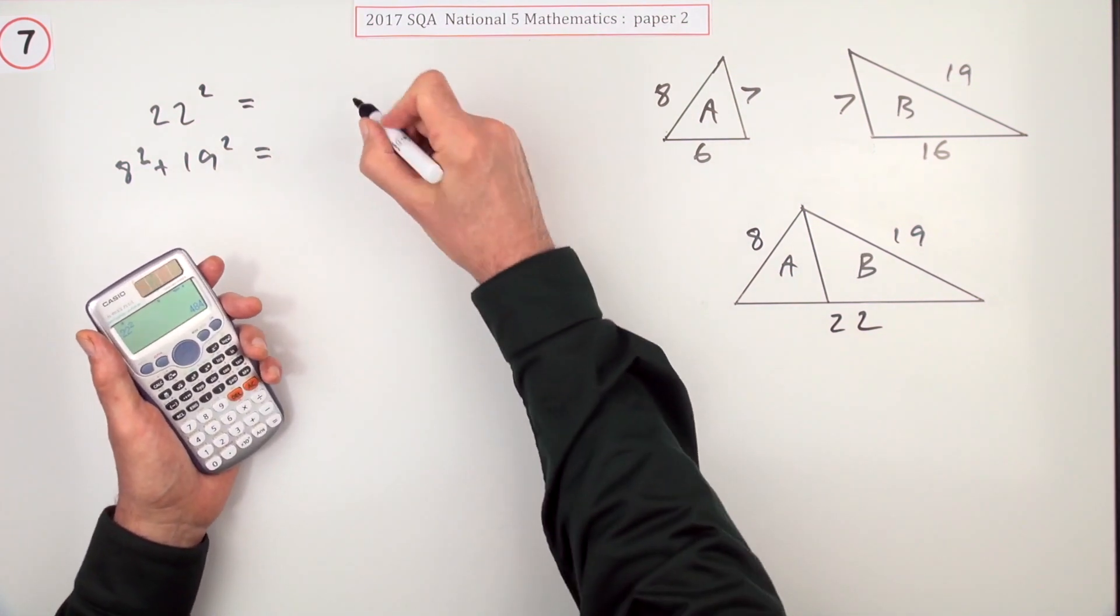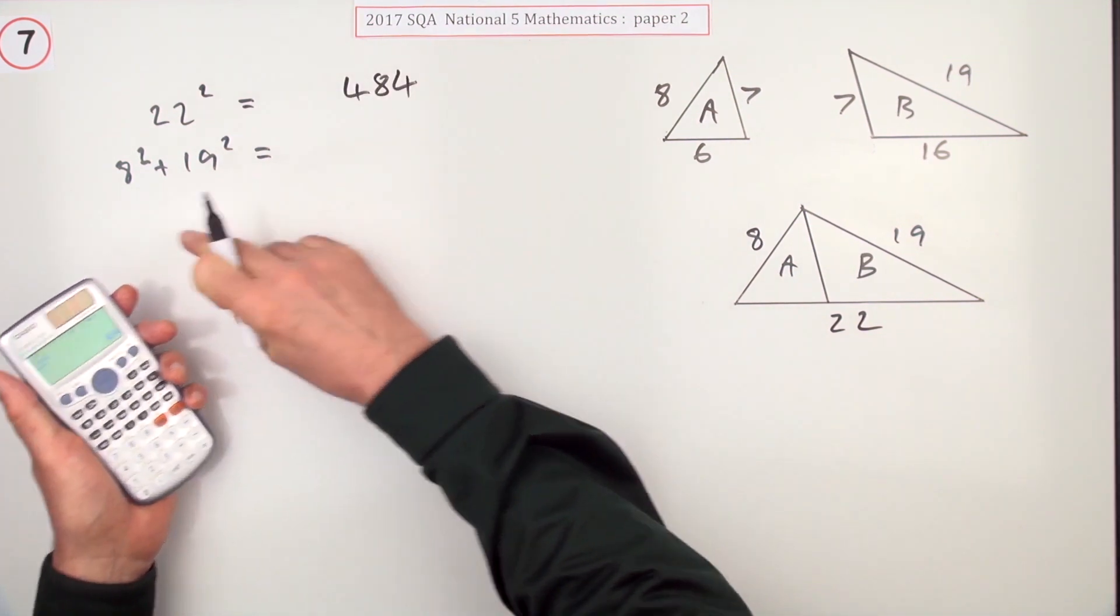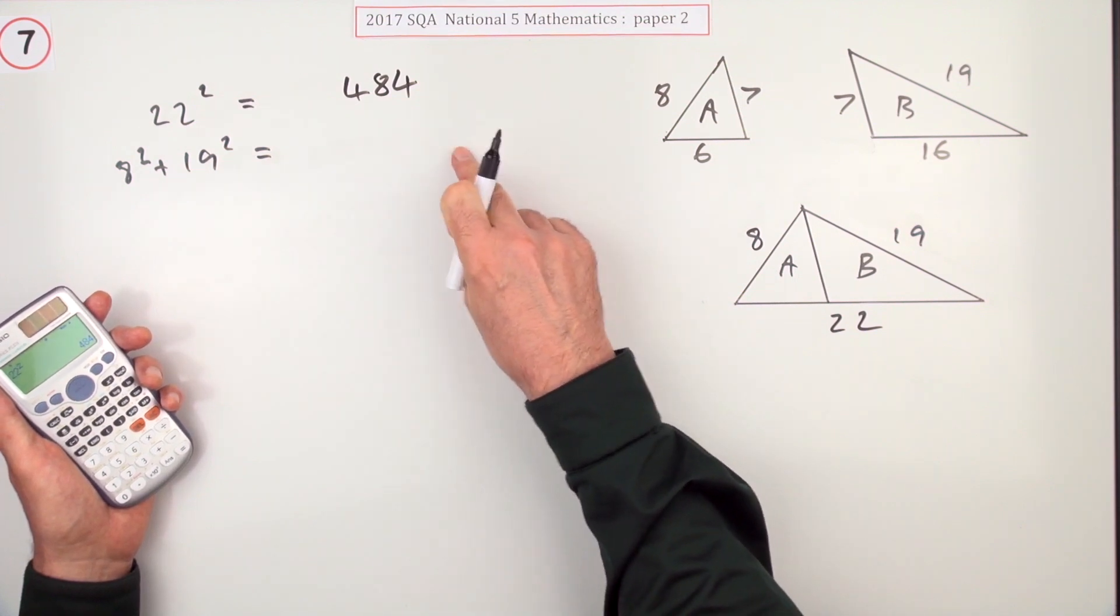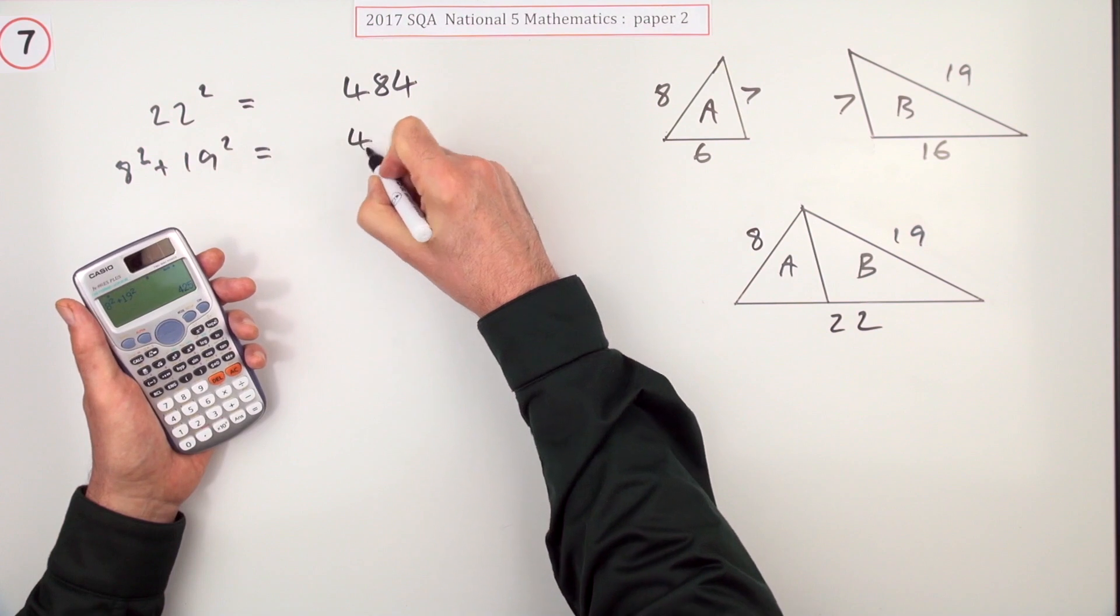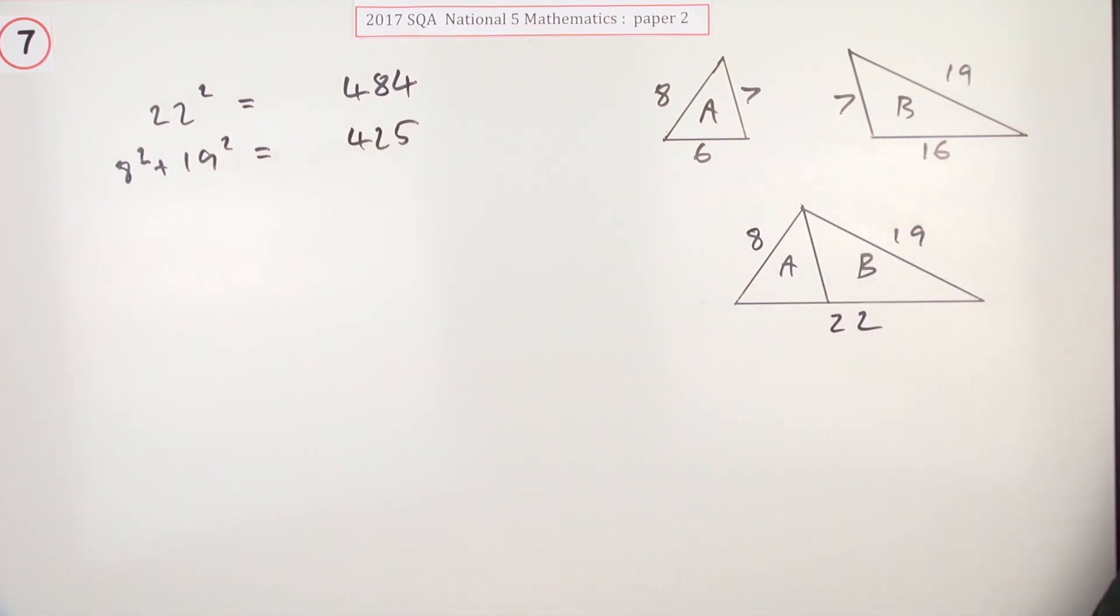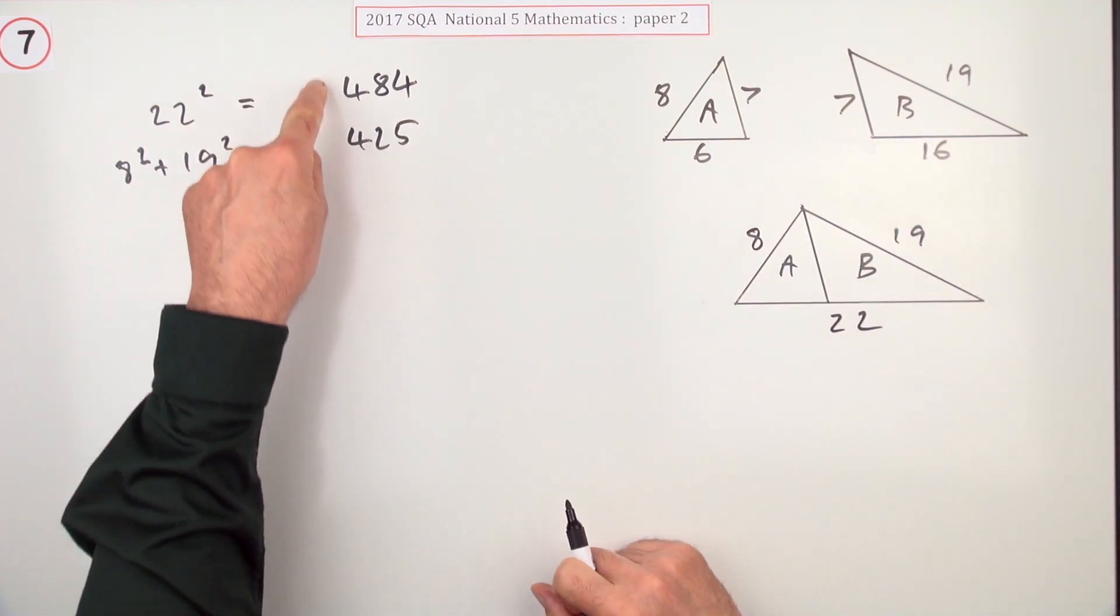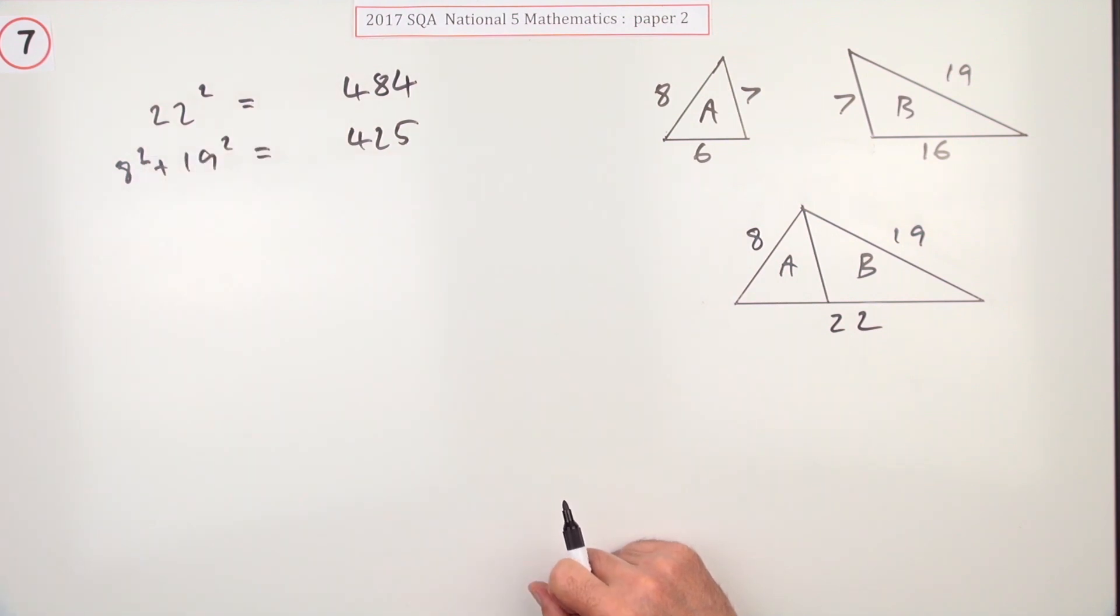For the first one you've got 484, and those two could be done separately or just put together, and putting them together gives 425.